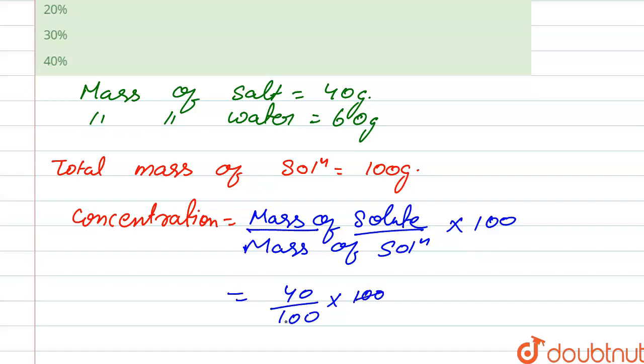So we put mass of solute, that is 40, mass of solution, that is 100, into 100. So it gives us 40 percent. So the concentration of solution is 40 percent, so our correct option is also fourth.